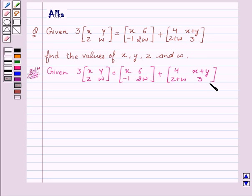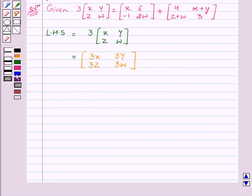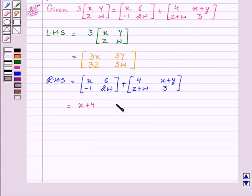Now we will first of all take the LHS. On multiplying 3 with the given matrix, we get [3x, 3y; 3z, 3w]. Now from RHS we see that [x+4, 6+x+y; -1+z+w, 2w+3].